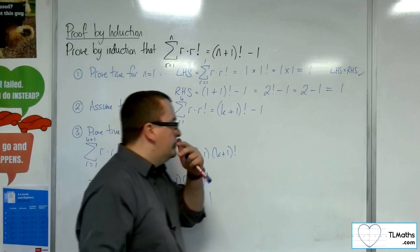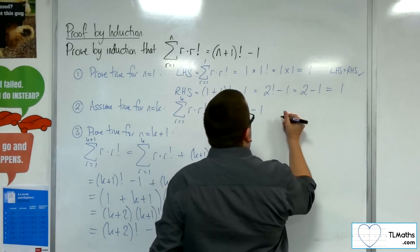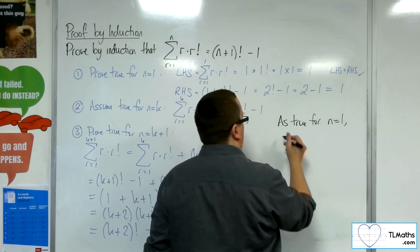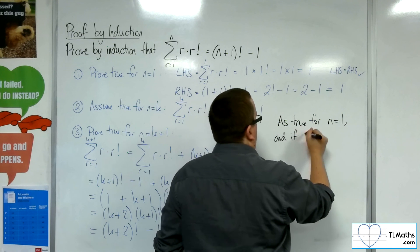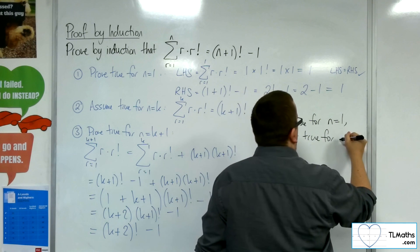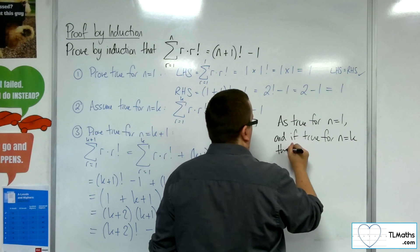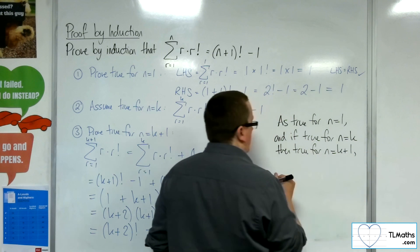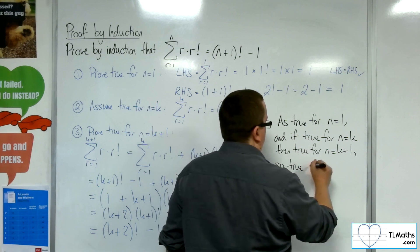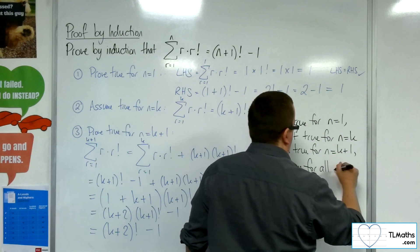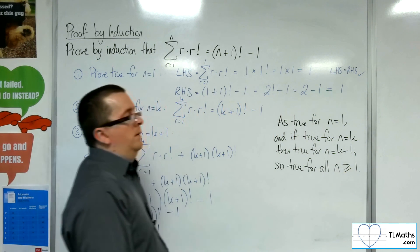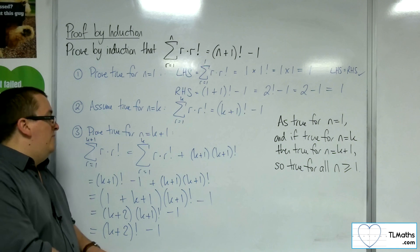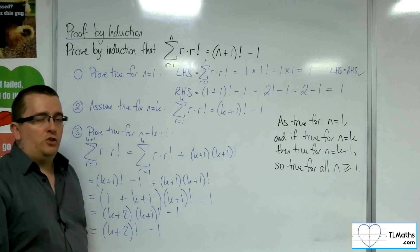Concluding statement: as it is true for N equals 1, and if true for N equals K then true for N equals K plus 1, the result is true for all N by the method of induction. And that's how we can solve this problem with factorials.